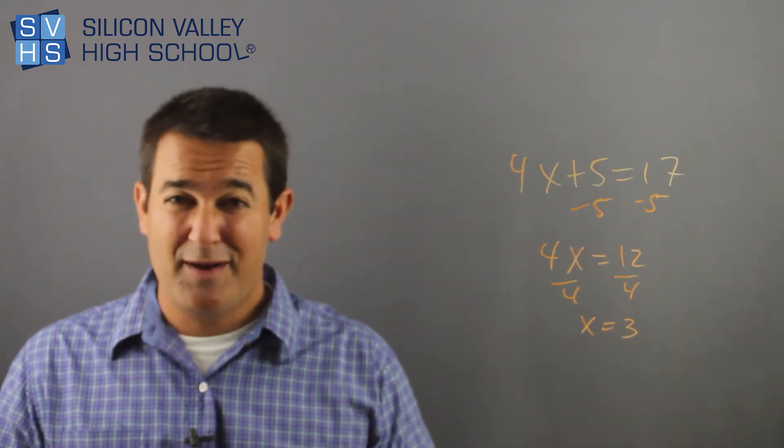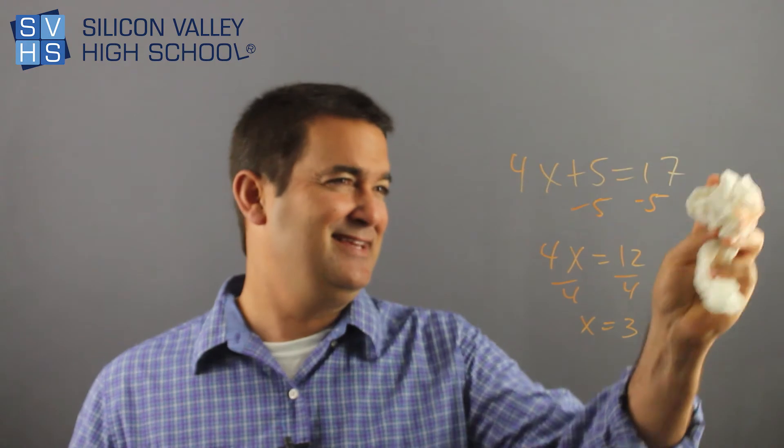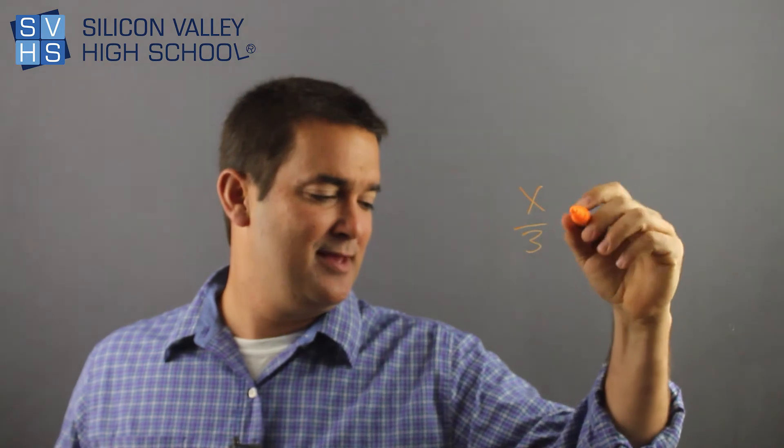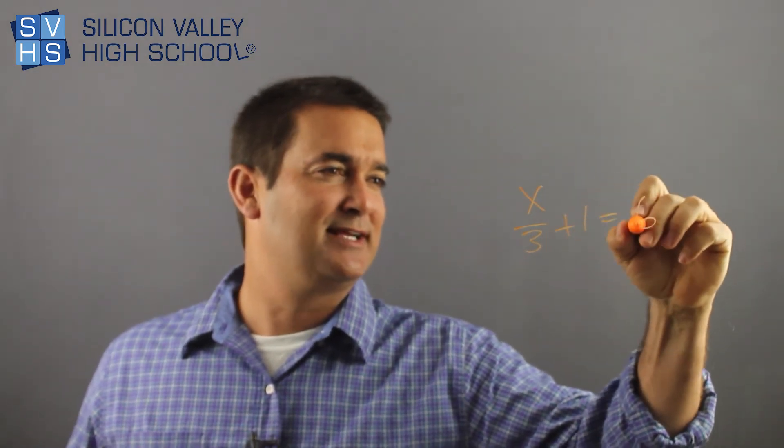Okay. I'll do one more weird one. I mean, these aren't weird. So they're pretty easy. So I'll try to come up with kind of like one that might be a curveball on a quiz. And it'll be something like this. So let's say you have x over 3 plus 1 equals 6. Okay.